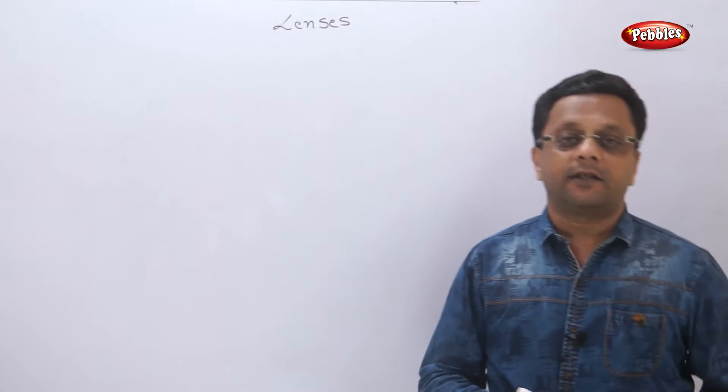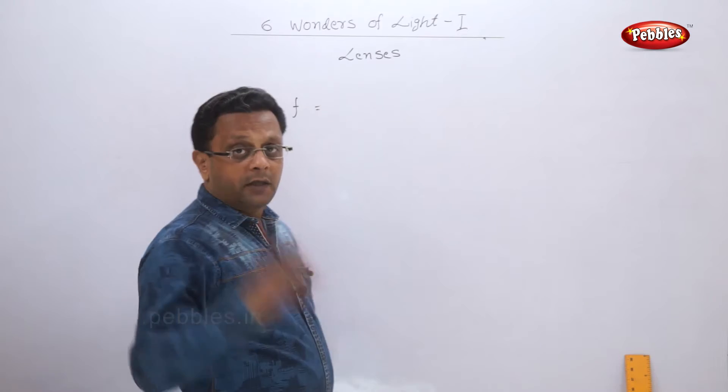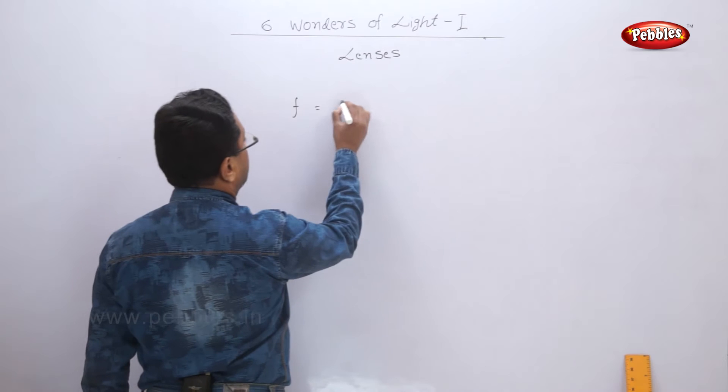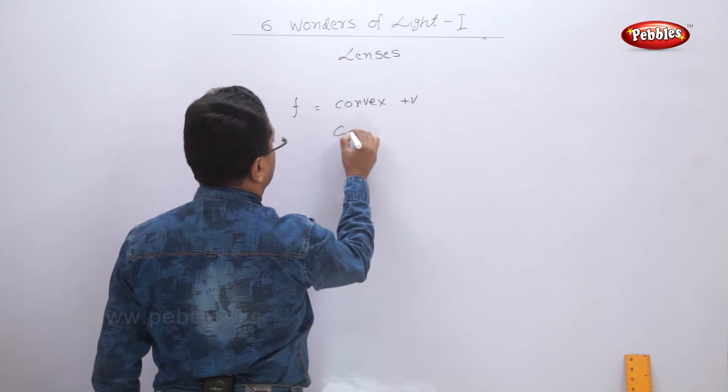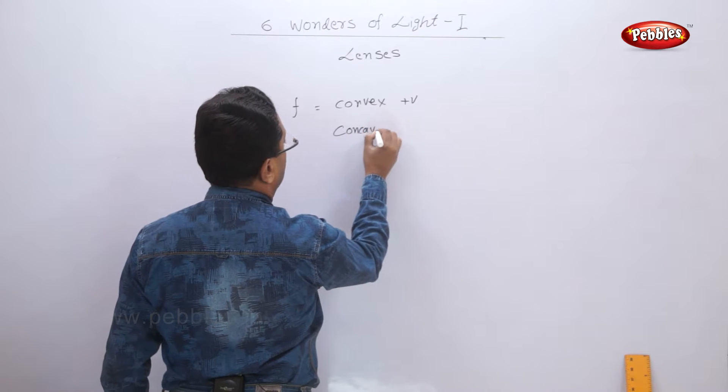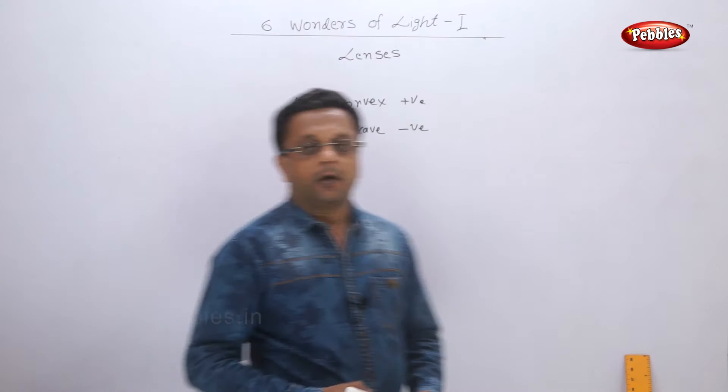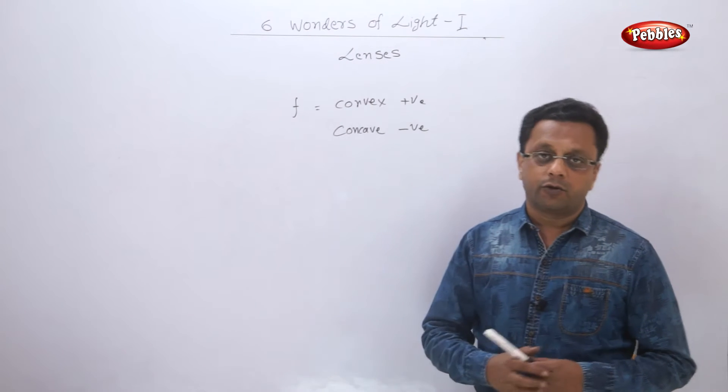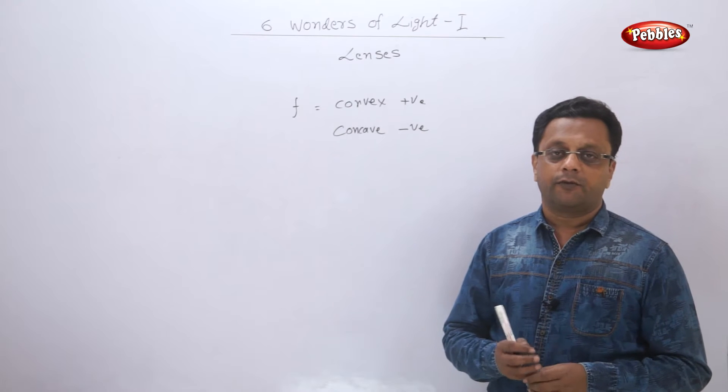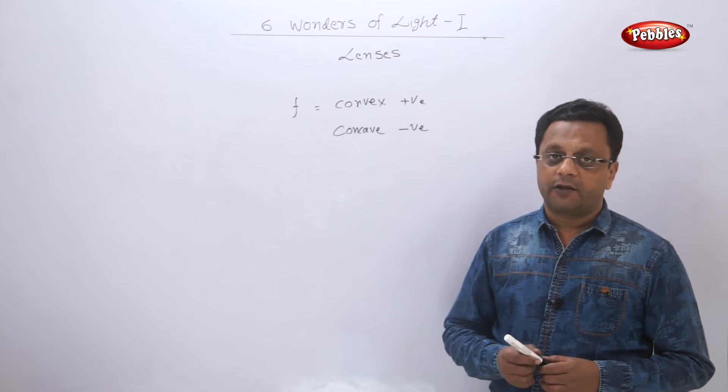Before going ahead, let us see the sign conventions for lenses. The focal length f for a convex lens is positive and for a concave lens is negative. For images, you should be very careful about the signs. If it is a real inverted image, you have to take the signs accordingly.